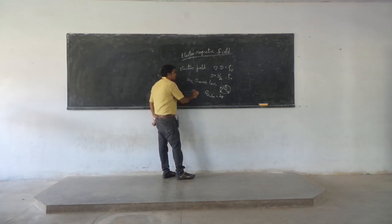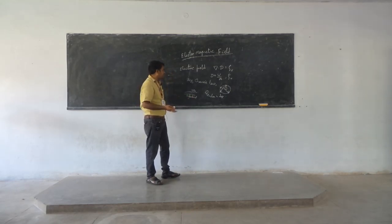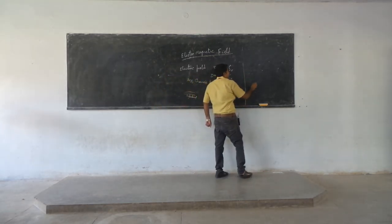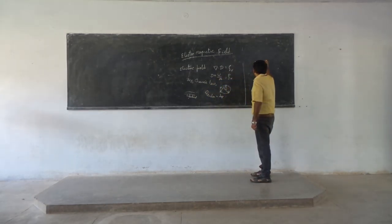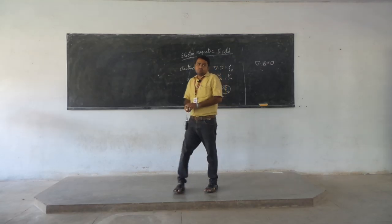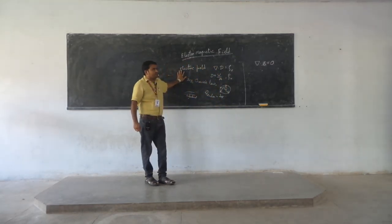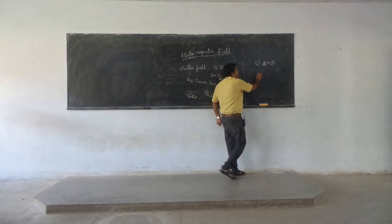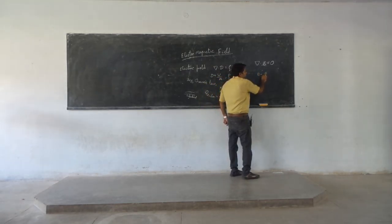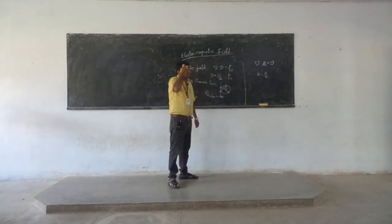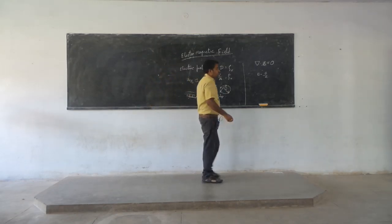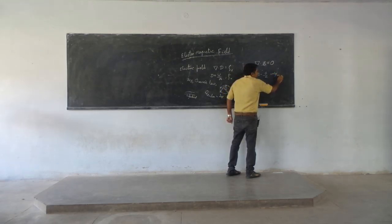Similarly, for the purely magnetic field, Maxwell's second equation is ∇·B = 0, where B represents magnetic flux density — the amount of magnetic flux passing through a particular area. Its unit is Weber per meter squared, and one Weber equals 10^8 magnetic lines.